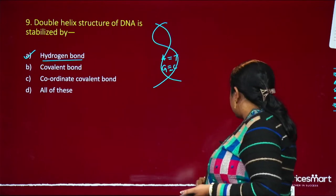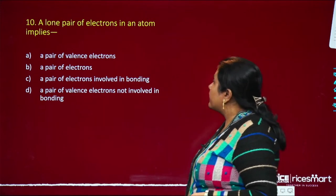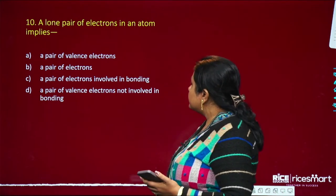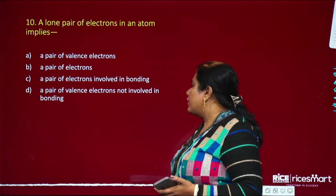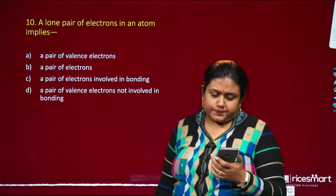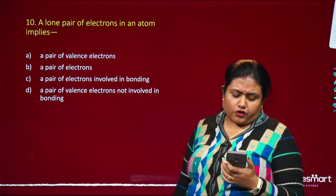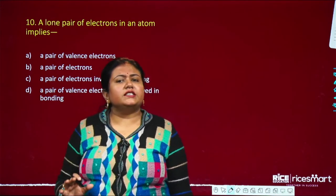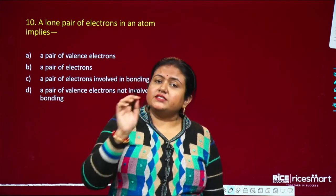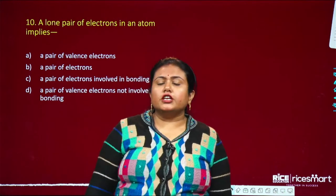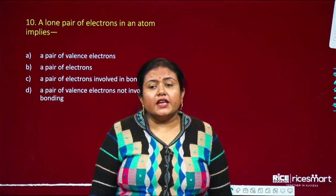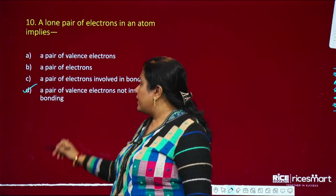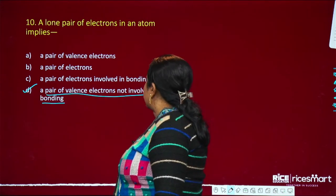Question number 10: lone pair electrons in an atom. A lone pair refers to a pair of valence electrons that are present in the last orbit but are not involved in bonding. These electrons are present in the valence shell but do not participate in bond formation — they are called lone pair electrons.